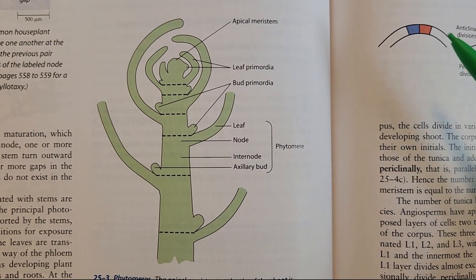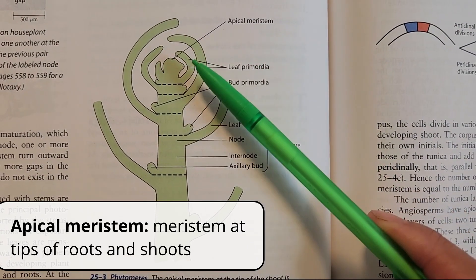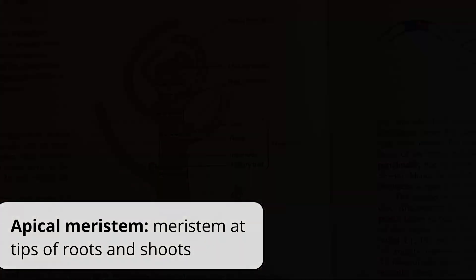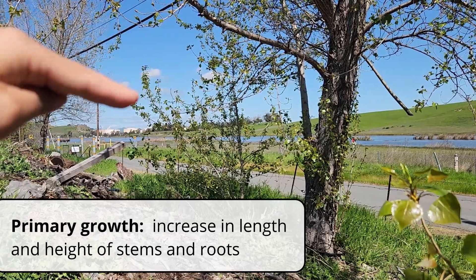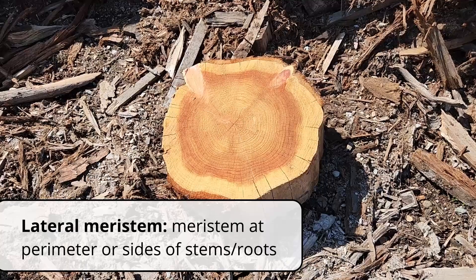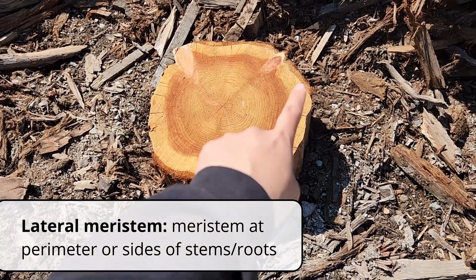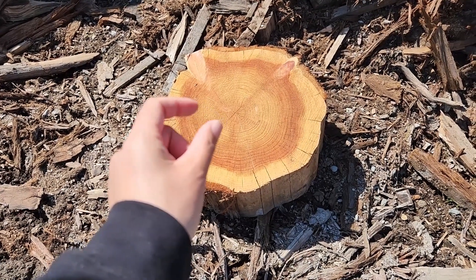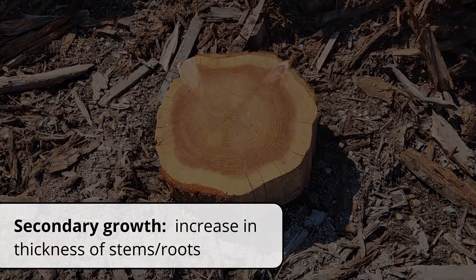Meristems are named based on where they're found. Apical meristems are found at the very tips or the apex of shoots and roots. Their purpose is to extend the body of the plant, and that extending growth in length and height is called primary growth. Lateral meristems are found on the sides or perimeters of a stem or root, and they increase the thickness of that part of the plant.